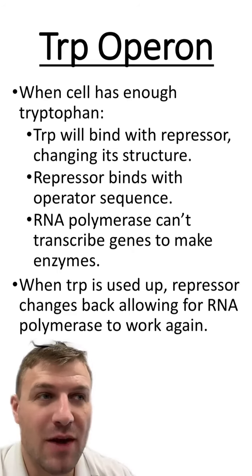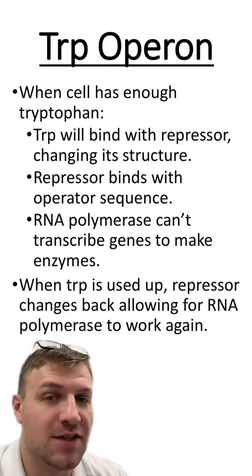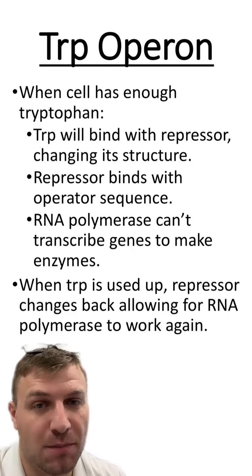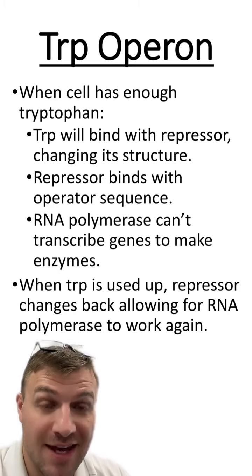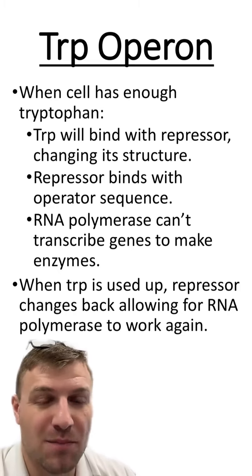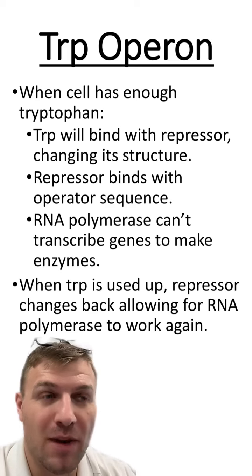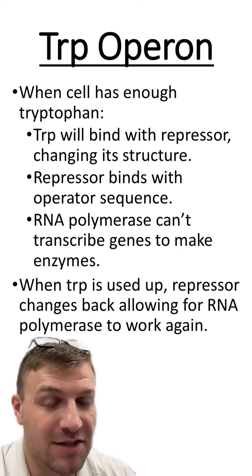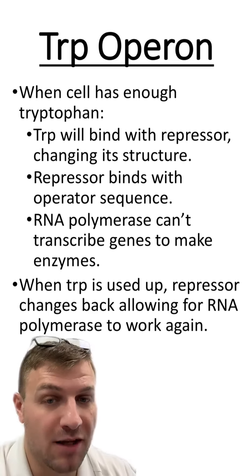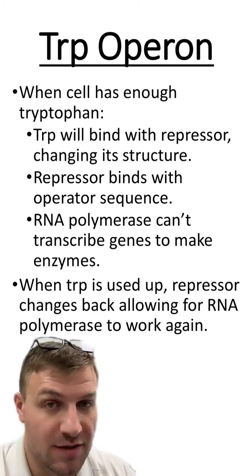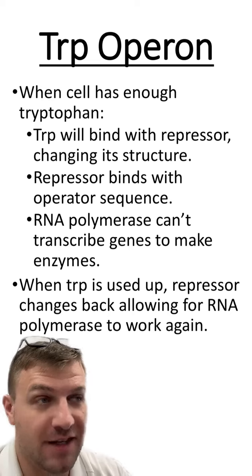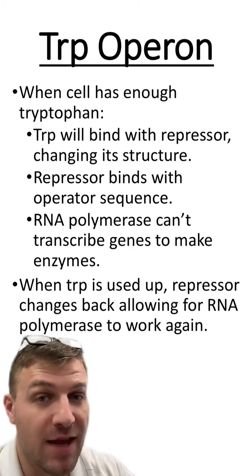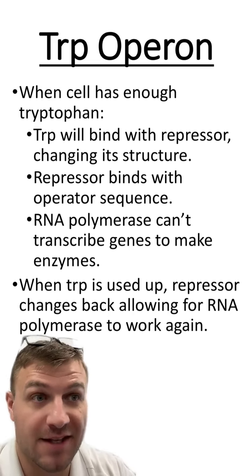Whenever the cell has enough tryptophan, the tryptophan is going to bind to the repressor, changing its structure and eventually changing its function. The repressor then will bind to the operator sequence, which stops RNA polymerase from transcribing the genes. This is because the cell already has enough tryptophan and doesn't need to keep making it.